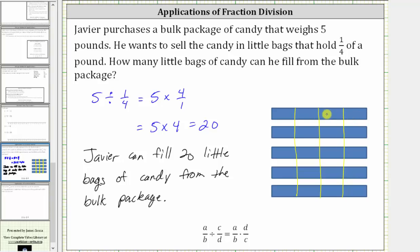And from here, since each small piece represents one-fourth of a pound, we can simply count the total number of pieces. Notice how we have a total of 20 pieces. Each piece represents one-fourth of a pound, which does verify Javier can fill 20 little bags of candy, each weighing one-fourth of a pound from the bulk package of five pounds. I hope you found this helpful.